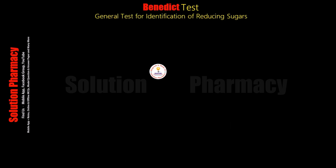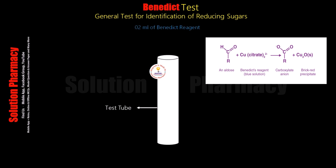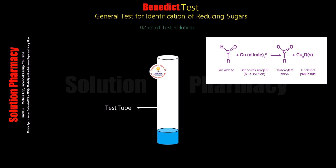To perform the Benedict test, first take a test tube and add 2 ml of Benedict reagent. We have already uploaded a practical video on the preparation method of Benedict reagent — the link is given in the description box. After transferring 2 ml of Benedict reagent into the test tube, add 2 ml of the test solution in which we have to identify the presence of reducing sugar. The sample can be in solid or liquid form; if it is in solid form, convert it into solution form first.